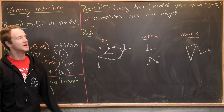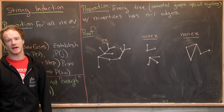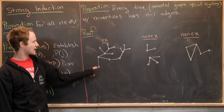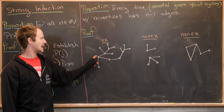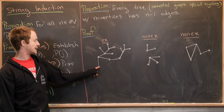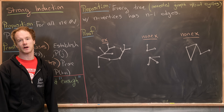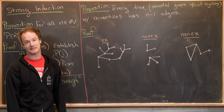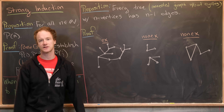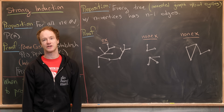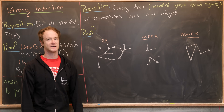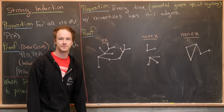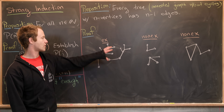Our last example comes from graph theory. We want to prove that every tree with n vertices has n-1 edges. Recall that a tree is a connected graph without cycles. Here's an example of a tree — vertices at the dots, edges connecting them. A non-example is a disconnected graph. Another non-example has a cycle, which you know when you see it — a loop going around.